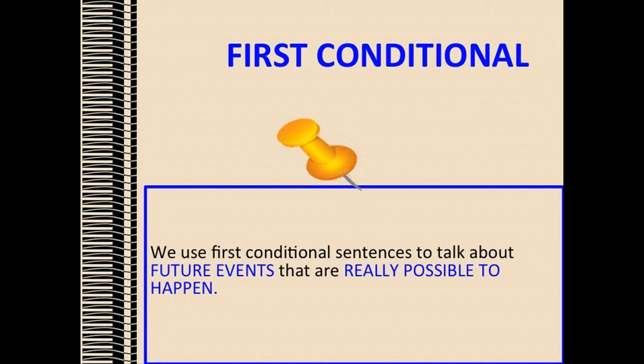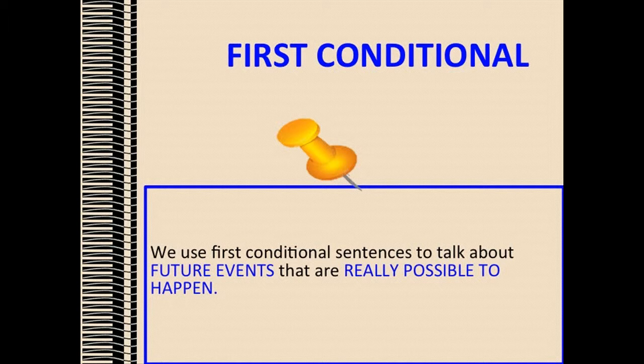First conditional. We use first conditional sentences to talk about future events that are really possible to happen. The first conditional describes a specific future event.